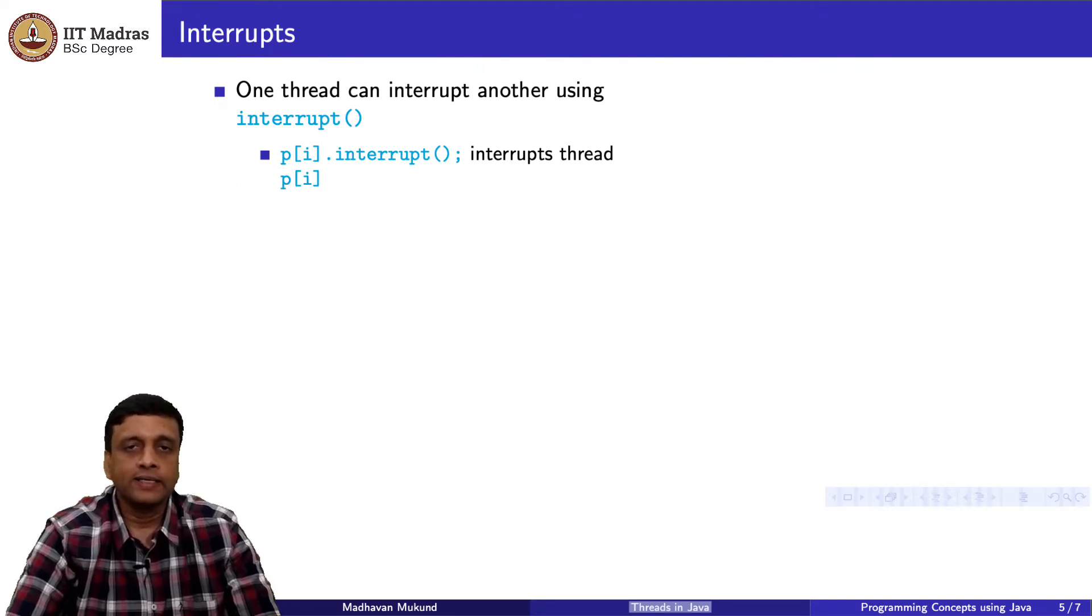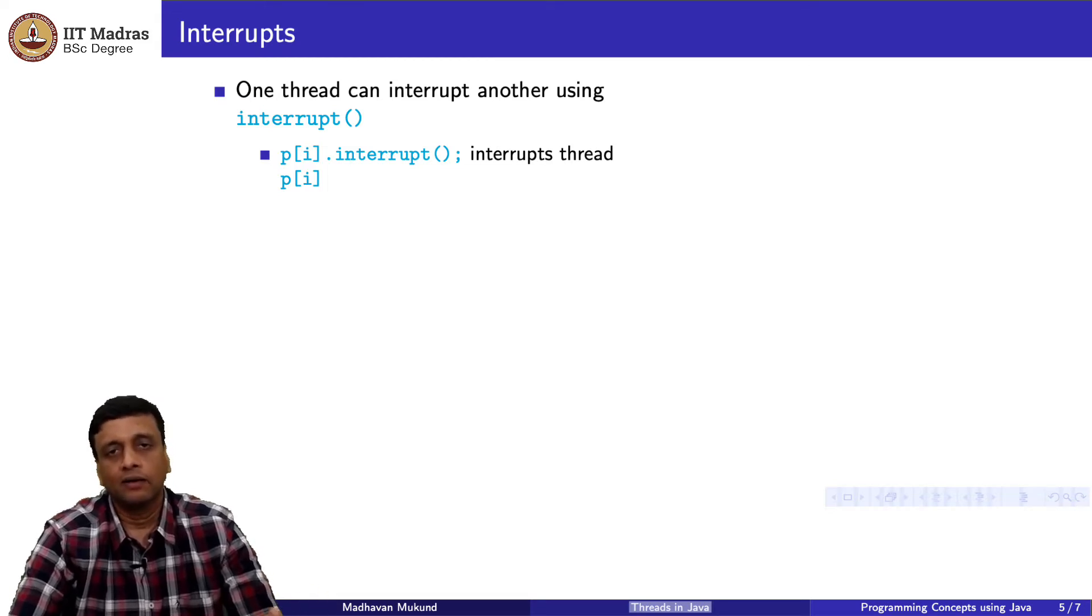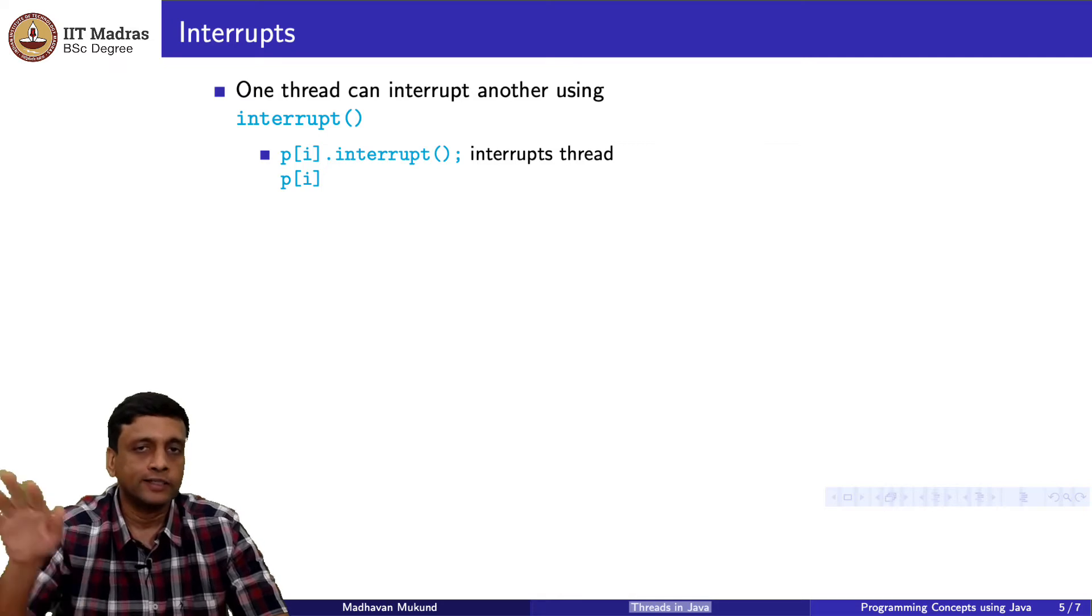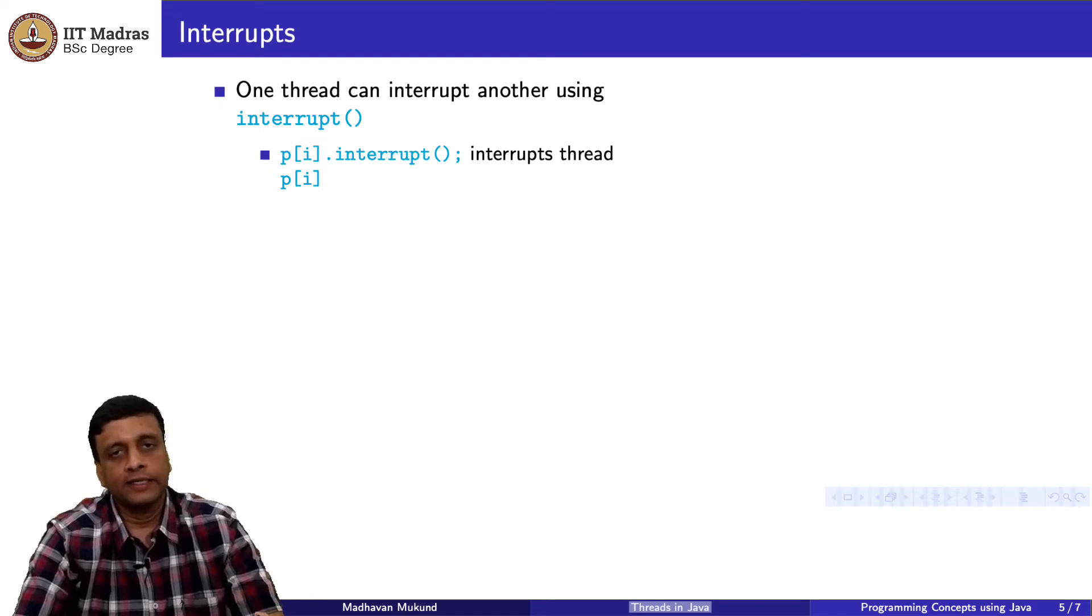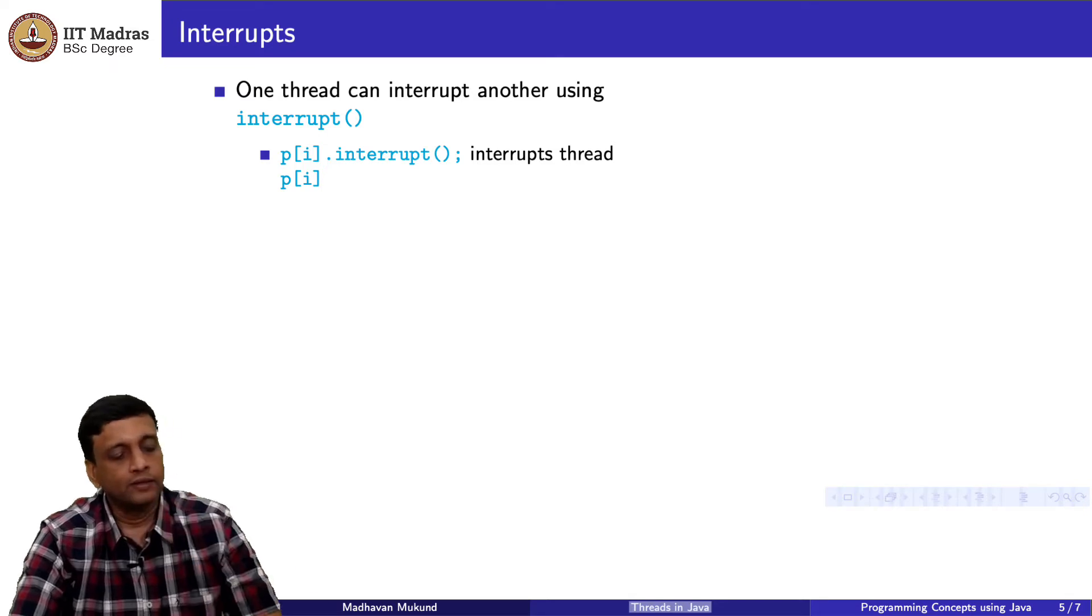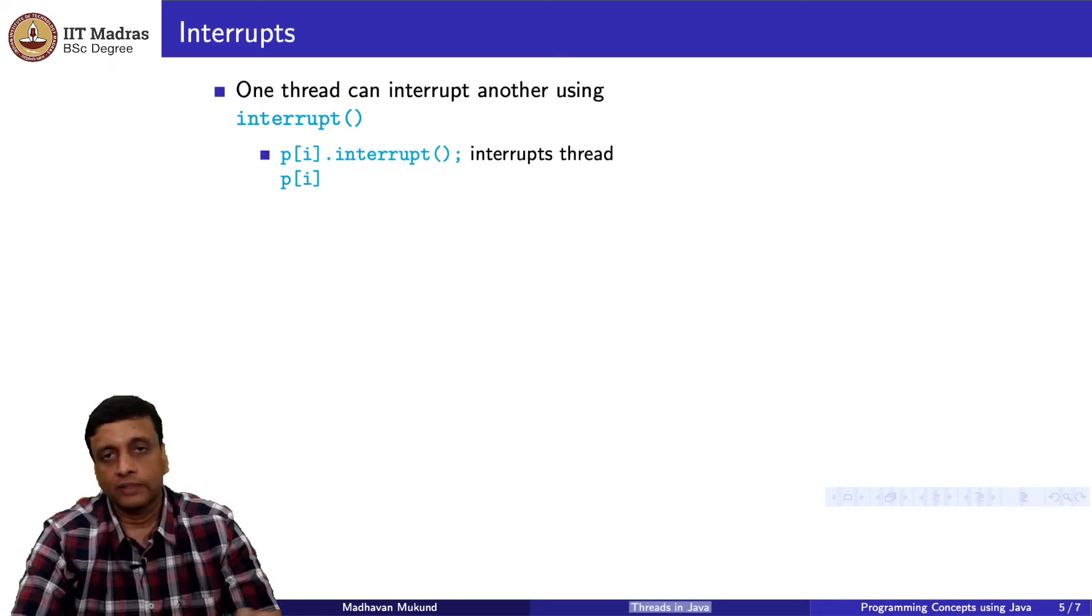You might want to send a signal to another thread that something interesting has happened. Or you might just want to tell another thread that it should stop running. An interrupt is like what you would expect in the word. You go and tap somebody on the shoulder and say, excuse me. They are busy watching something and you go and tap them on the shoulder and they will interrupt them. If I say give a thread and I say interrupt, then it sends a signal to the other thread that it is been interrupted. Now, the signal does not carry any information.